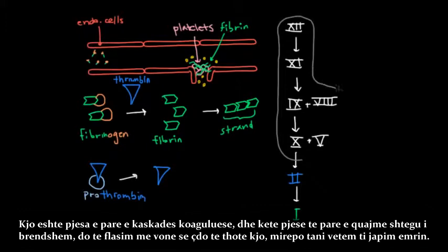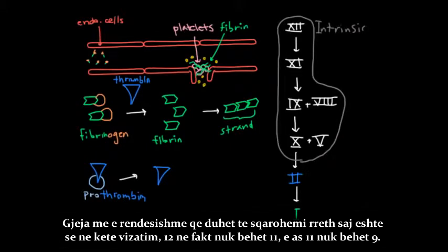And it turns out that we call this part here the intrinsic pathway. And we can talk about what that means later, but for now, let's just give it its name. But what's perhaps more important to be clear about is that in this drawing, 12 is not actually becoming 11, and 11 is not actually becoming 9.